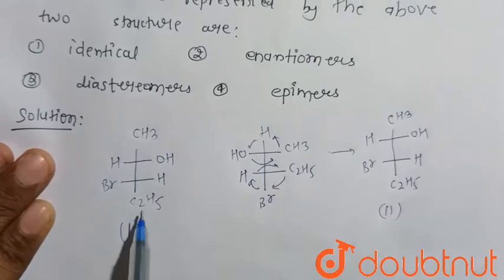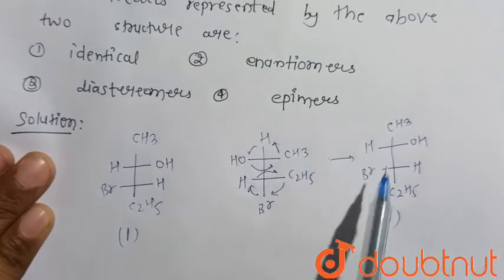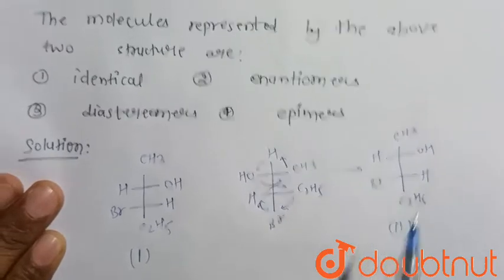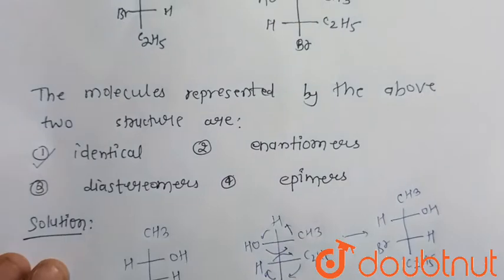We can clearly see that both are identical after the rotation. So the relation between them is identical. That is option number first.